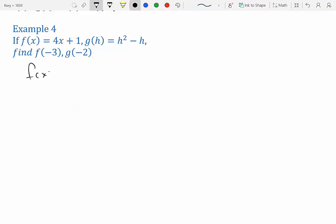So we have f(x) = 4x + 1. And we want to find f(-3). So you see how it's f(-3)? That's the same thing as f(x). So the x becomes -3. So we have f(-3) = 4 times -3 + 1.